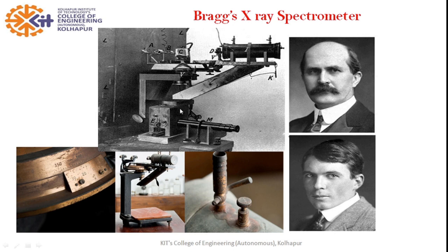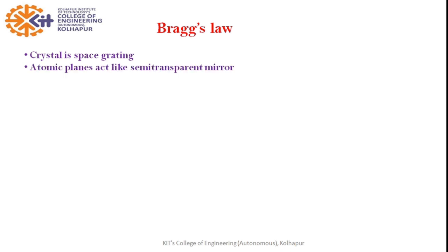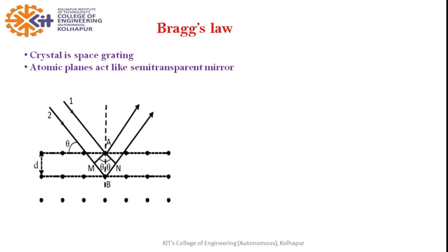This is the setup used by the Braggs for their experimentation of crystal study. While deriving Bragg's law, the Braggs made certain assumptions. First, the crystal is a space grating — it is an aggregate of sets of parallel equidistant atomic planes, making it a three-dimensional grating. Second, atomic planes in a crystal act like semi-transparent mirrors. When an X-ray beam is incident on the crystal, the beam is reflected by the atomic planes.